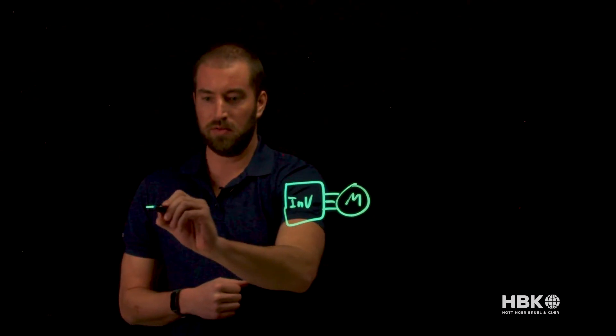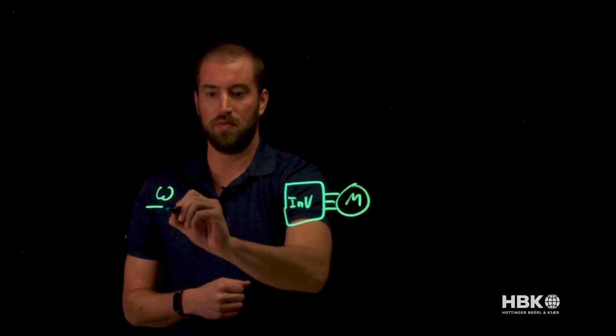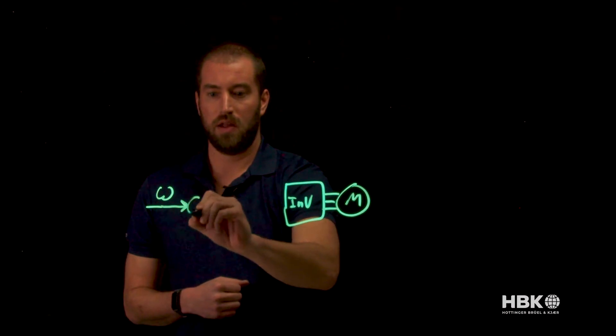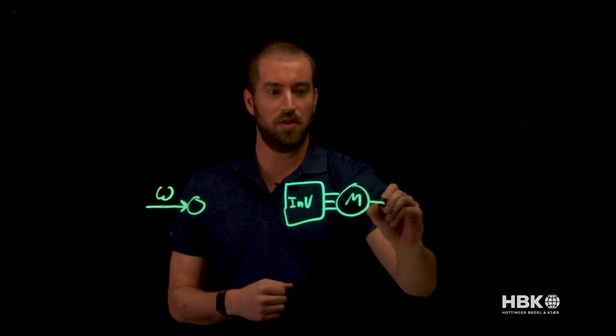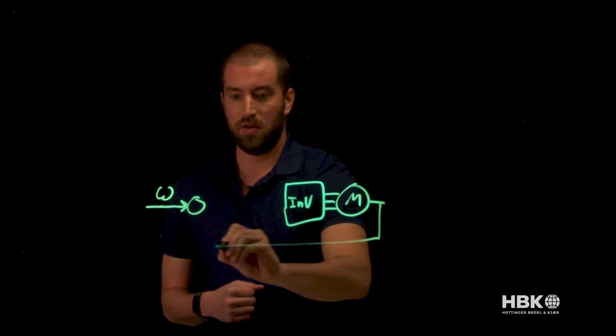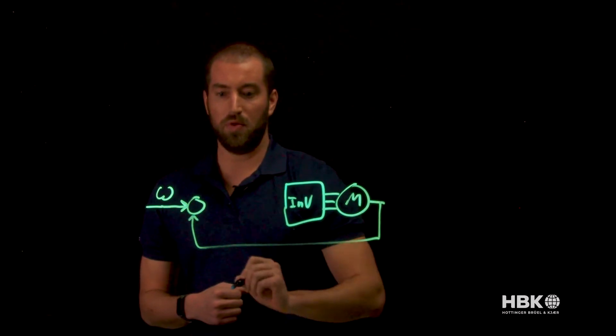Our pedal is going to be giving us an input speed, and that input speed is going to be compared with our real speed. For example, maybe we want to go 60 miles an hour and we're currently at 50.